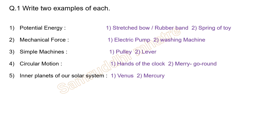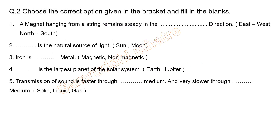Inner planets of our solar system: we have two examples — Venus and Mercury.